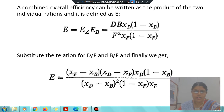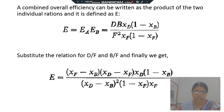Good morning students. In yesterday's session, we discussed how to find out the effectiveness of the screen, what is the range mass ratio of the overflow to feed and underflow to feed, and we derived the formula to find out the effectiveness of the screen. In today's session, we have to start solving sums based on this theory.